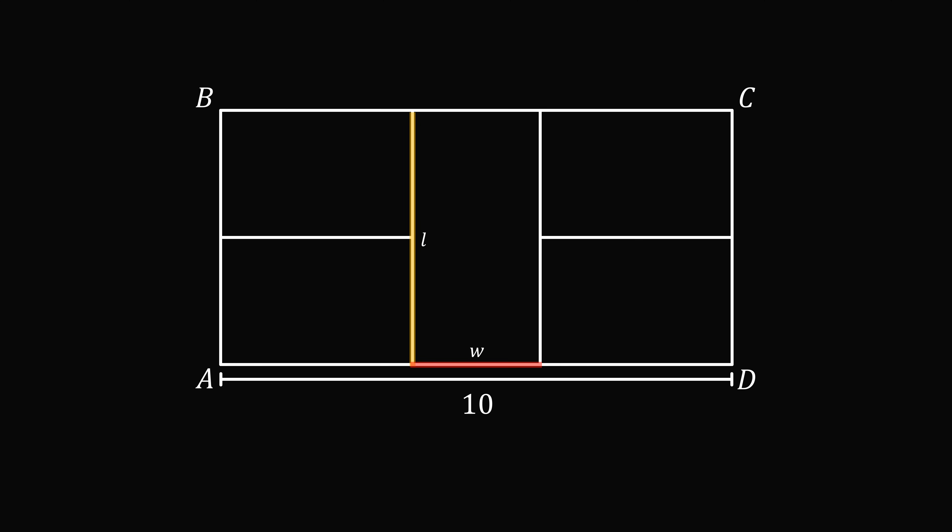Because the five rectangles are congruent to each other, we can label the dimensions of the other rectangles. So here we have W, here we have another W, here we have L, and here we have another L.